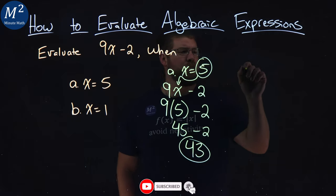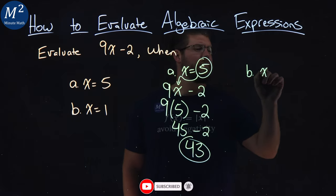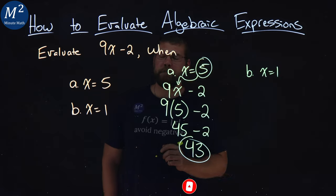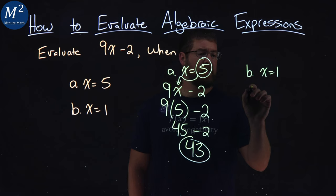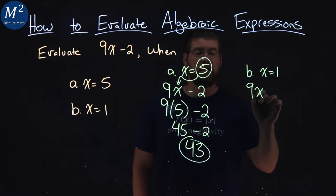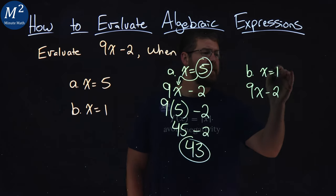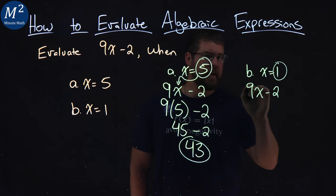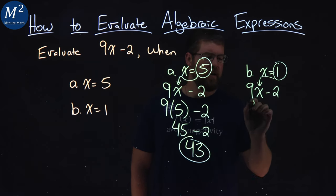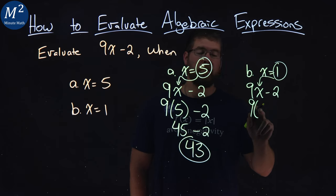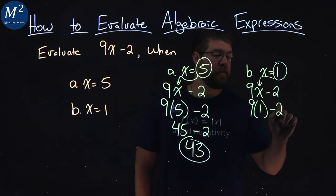Now let's try again for B, when x equals 1. When x equals 1, I follow the same process. I rewrite the expression 9x minus 2, and I'm going to take this 1 that x is equal to and substitute it in for x. Same idea, 9 times, instead of x, I put a 1 minus a 2.